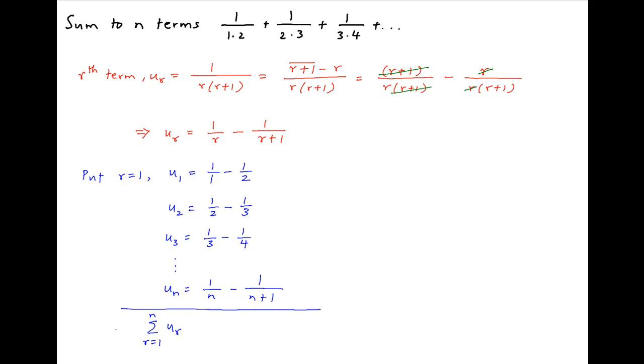Now sum up all of these expressions. On the left-hand side, we get the sum of the series to n terms. And on the right-hand side, alternate terms cancel out, and we are left with only two terms.